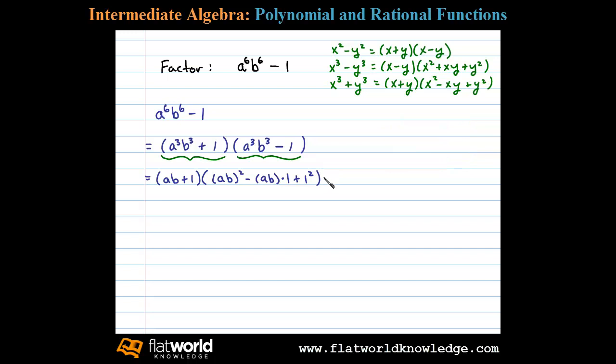And we have a b minus one times a b squared plus a b times one plus one squared. Now all that's left to do is clean things up. So we have a b plus one times a b squared leaves us with a squared b squared minus a b plus one.